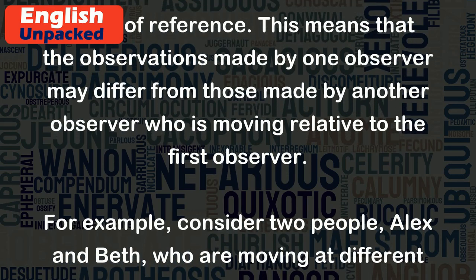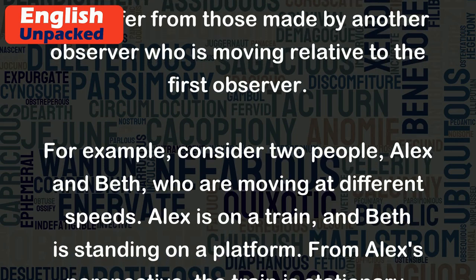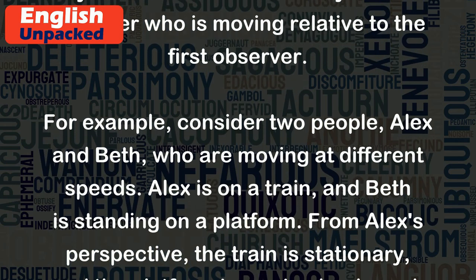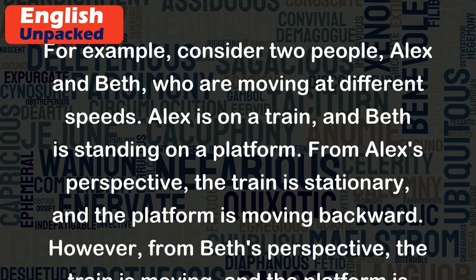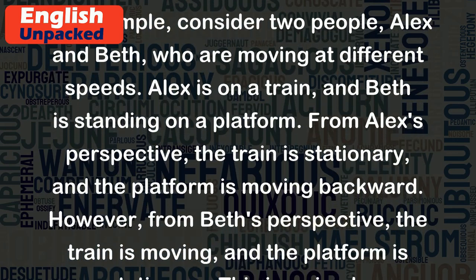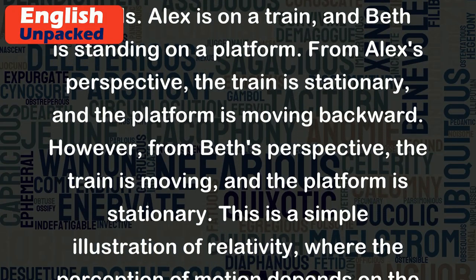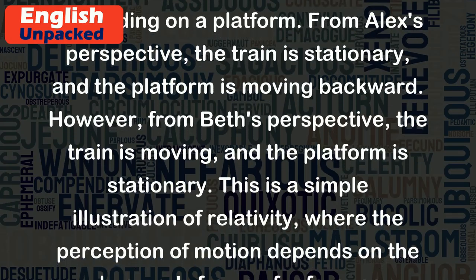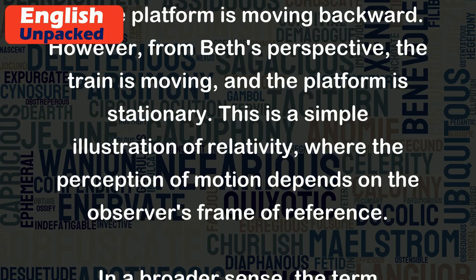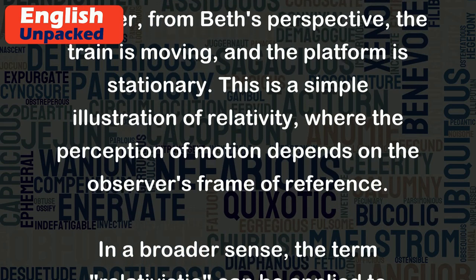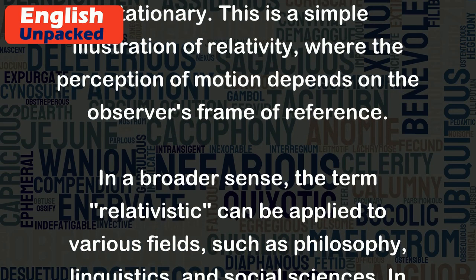For example, consider two people, Alex and Beth, who are moving at different speeds. Alex is on a train, and Beth is standing on a platform. From Alex's perspective, the train is stationary and the platform is moving backward. However, from Beth's perspective, the train is moving and the platform is stationary. This is a simple illustration of relativity, where the perception of motion depends on the observer's frame of reference.